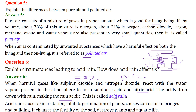What can happen with acid rain? Acid rain can cause skin irritation, inhibit germination of plants, cause corrosion to bridges and buildings, affect the fertility of soil, destroy the soil, and most importantly damage aquatic life.